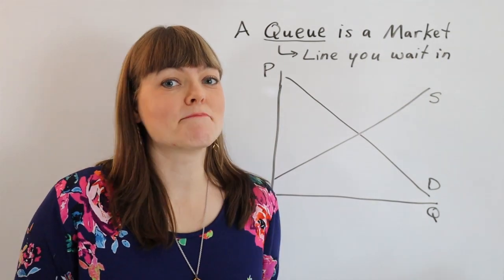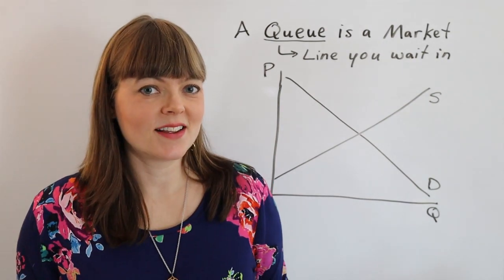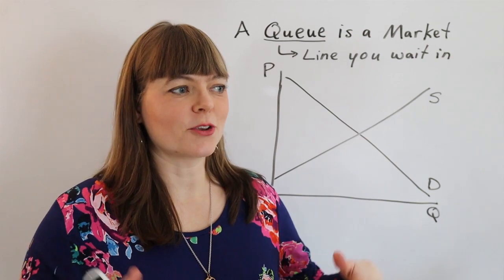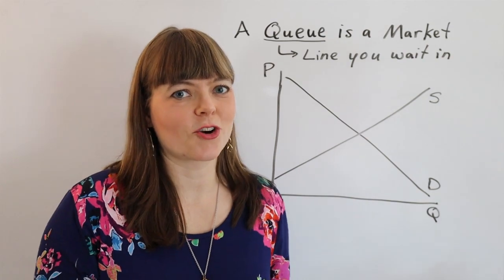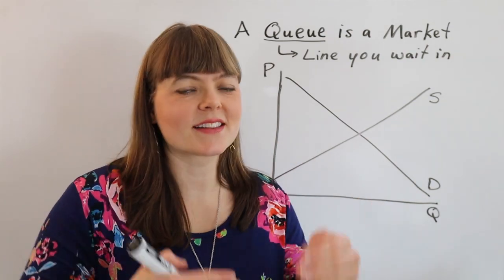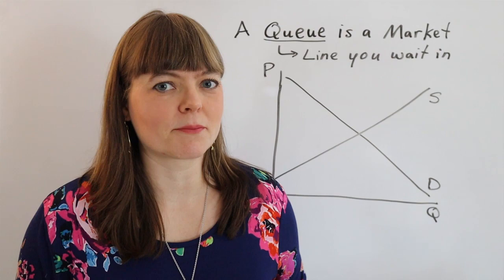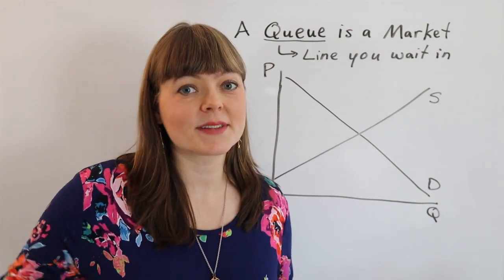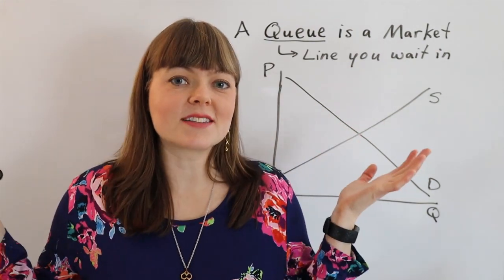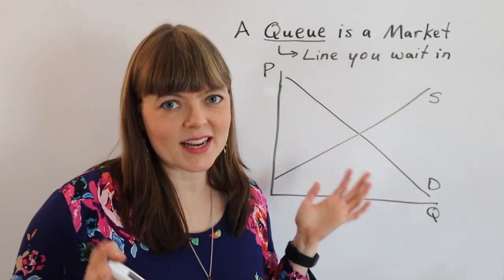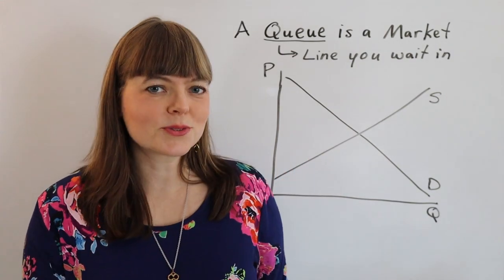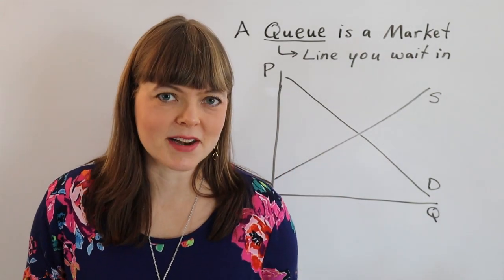A queue is a market. When I say queue, I'm talking about a line that you stand in — or a virtual line — that you get in to wait for something where you have a place in that line. That's actually a market, and you can model it exactly like you model a regular market using supply and demand curves.